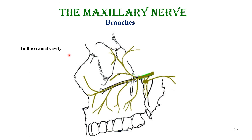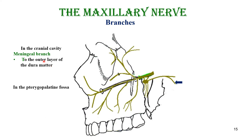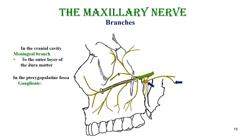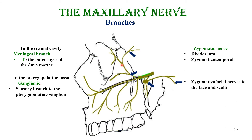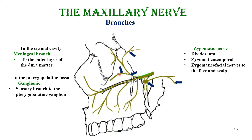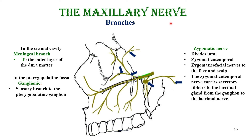Branches in the cranial cavity include a meningeal branch supplying the outer layer of the dura. In the pterygopalatine fossa it gives ganglionic branches to the sphenopalatine ganglion — sensory branches supplying the nose — and a zygomatic branch dividing into the zygomaticotemporal and zygomaticofacial nerves. The zygomaticotemporal carries secretory fibers to the lacrimal gland, which are then carried by the lacrimal nerve.